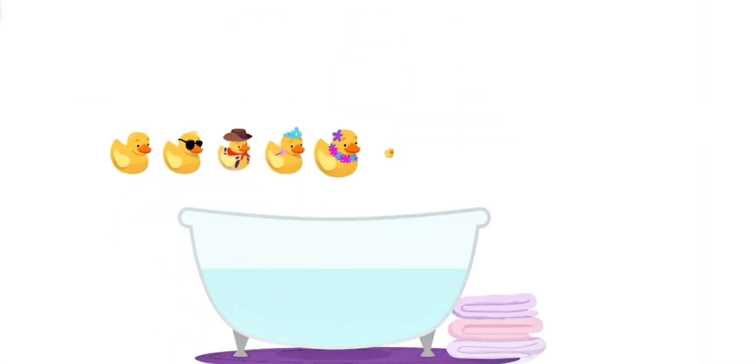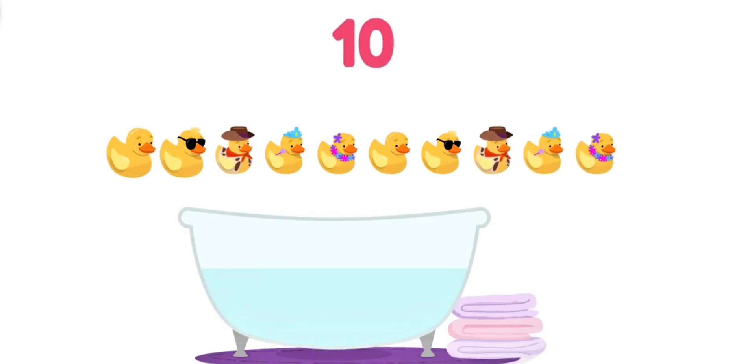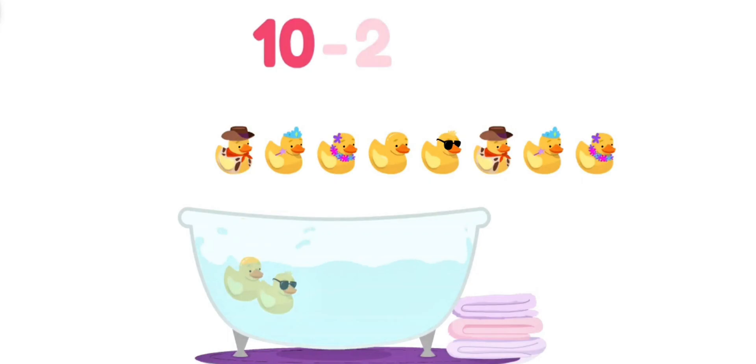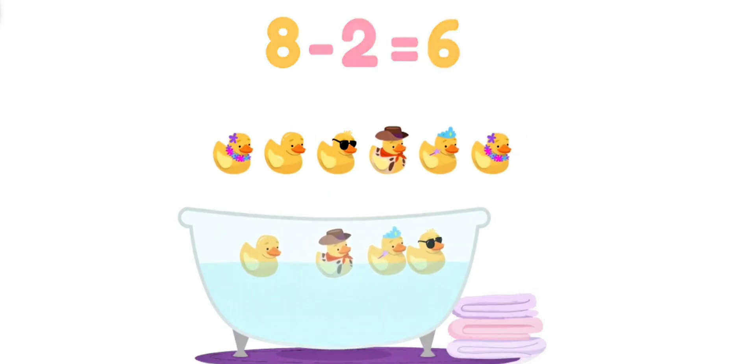Allo and I are playing with bath toys! We found ten! I want to put two in the water, and Allo wants to put two in the water! How many will be left? We have to do ten minus two minus two to find out! Ten minus two is eight! And eight minus two is six! So ten minus two minus two is six!